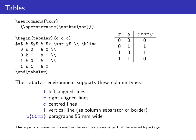If you want to typeset a table, there is a very similar environment to the array environment used in math mode, but the tabular environment is used outside math mode. You write begin tabular and end tabular. The columns are again separated by an ampersand and lines are terminated by a backslash. There is a mandatory argument in curly braces where you specify for each column whether it's left aligned, right aligned, or centered.